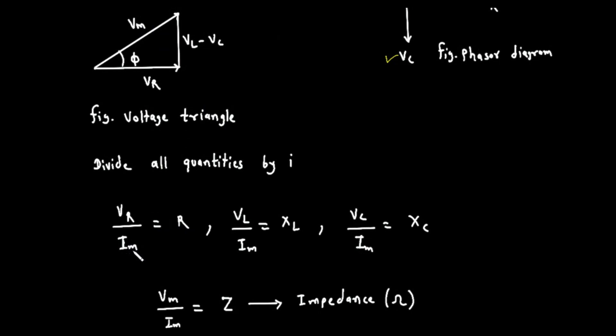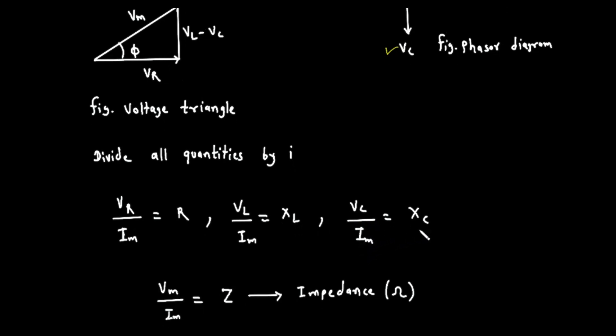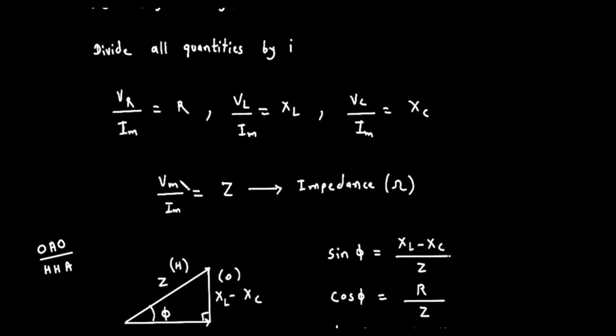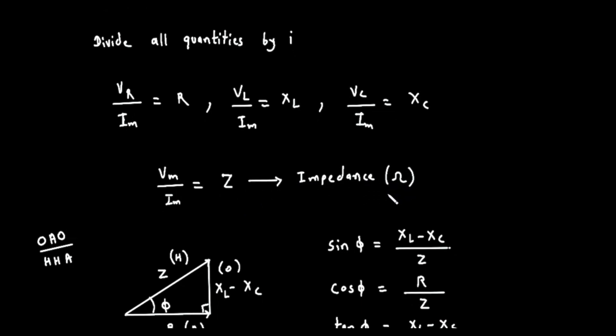When we take V sub R and divide it by I sub M, we get the resistance, R. When we take V sub L and divide it by I sub M, we get the inductive reactance, X sub L. When we take V sub C and divide it by I sub M, we get the capacitive reactance, X sub C. And most importantly, when we take the total voltage, V sub M, and divide it by the total current, I sub M, we get the total opposition to current in the entire AC circuit. This total opposition is called impedance, and it is represented by the letter Z and impedance is also measured in ohms.